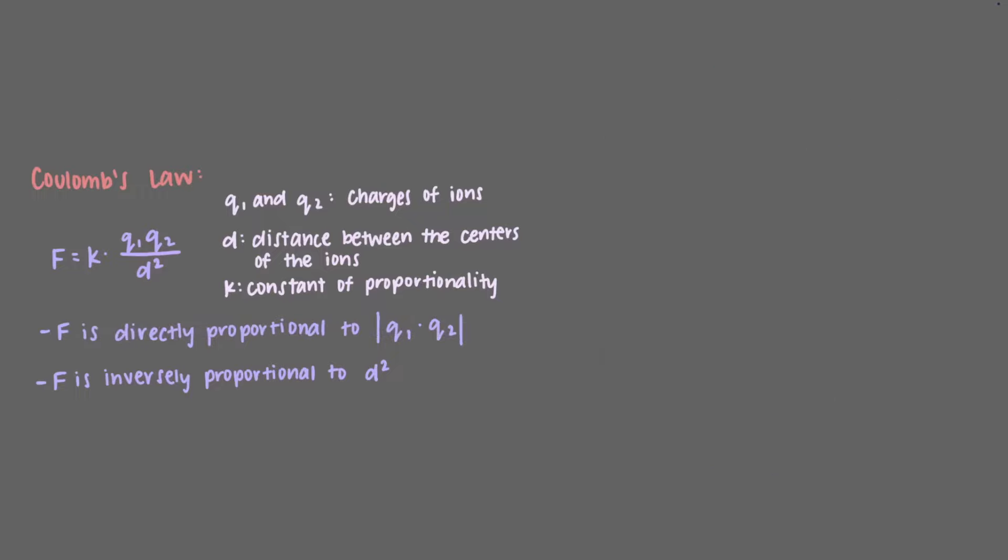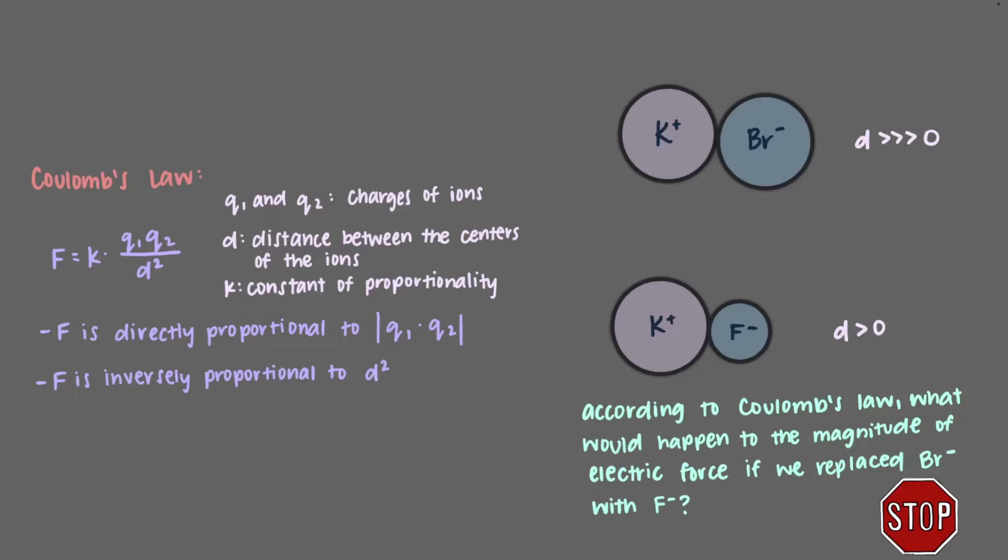Now let's consider how distance affects the electric force between two charged objects. Again, let's look at potassium and bromide. The atomic radius of bromide is fairly big, so the distance between it and potassium is also relatively big. According to Coulomb's Law, what would happen to the magnitude of electric force if we replaced the bromide ion with the fluoride ion, which is much smaller but has the same charge of negative one?